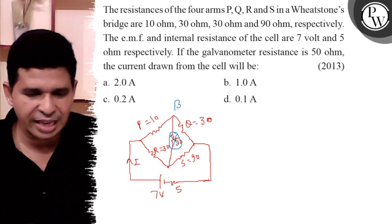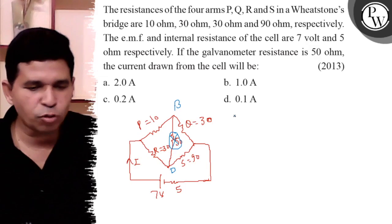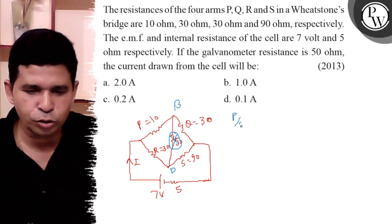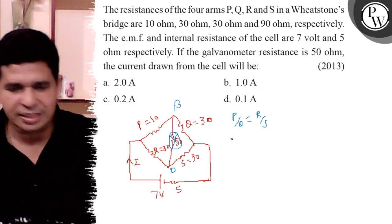So the potential of B and D is equal. B and D are equal because P over Q equals R over S. So the bridge is balanced, no current through galvanometer, no meaning of 50 ohm resistance.